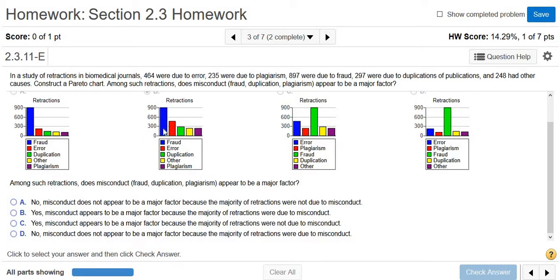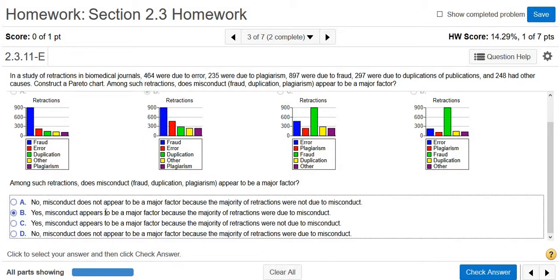So the number one issue is fraud, and the number three issue is duplication. So misconduct seems to be a major factor. So I would say yes, misconduct appears to be a major factor because the majority of retractions were due to misconduct.